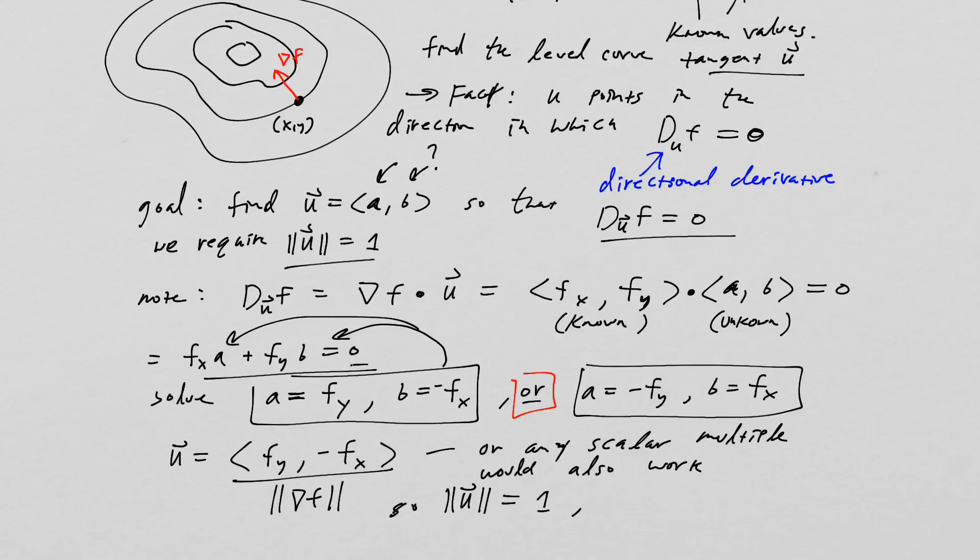We can also note that we're going to call this u_1, and then u_2 will be equal to its negative, which is going to be equal to negative f_y comma f_x, also scaled by the gradient vector value. So by definition, u dotted with grad f equals zero defines orthogonality. And of course, we have two directions, u_1 and u_2, which are opposite directions.